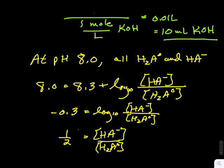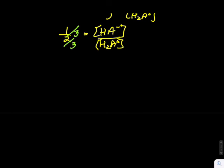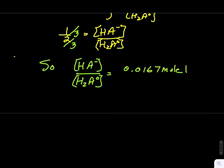As before, this can be written as 1 third over 2 thirds, and we see that the solution contains 0.0167 mol of HA minus, and 0.0333 mol of H2A zero.